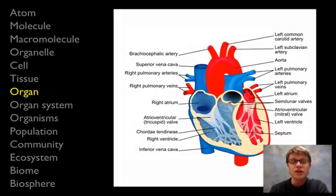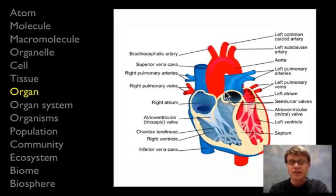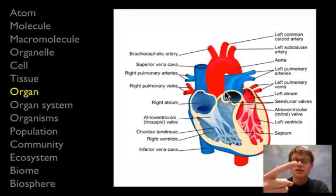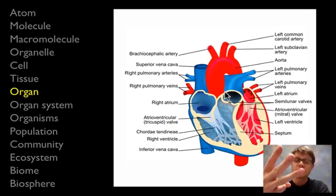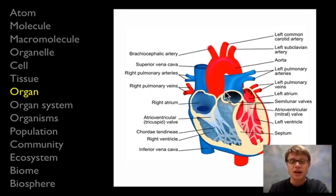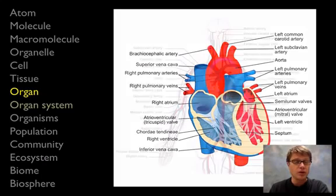When you have a bunch of tissues organized and working together, you have what's called an organ. This one is called the heart. It's going to have all four different types of tissues inside it: muscle tissue, nervous tissue, connective tissue, and epithelial tissue on the inside. All those tissues are working together with a single purpose.